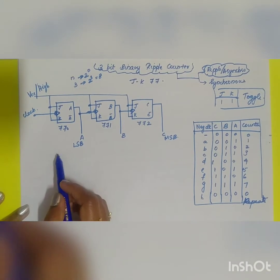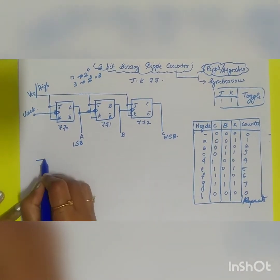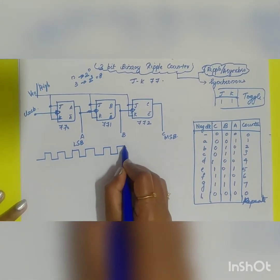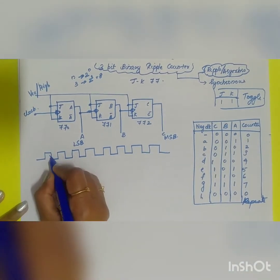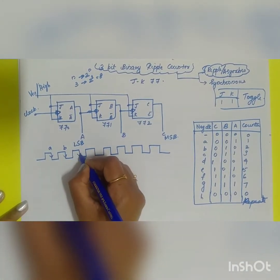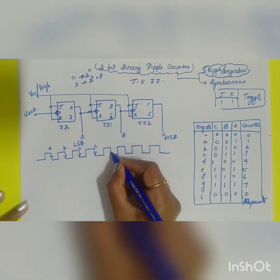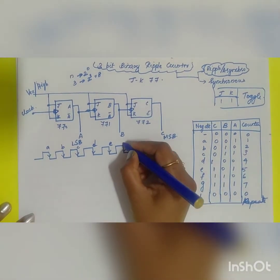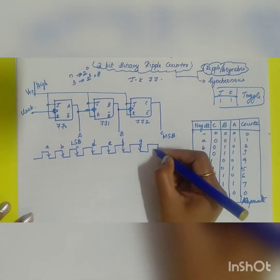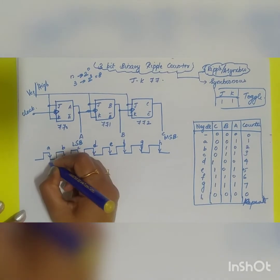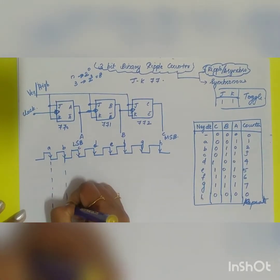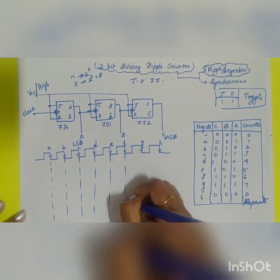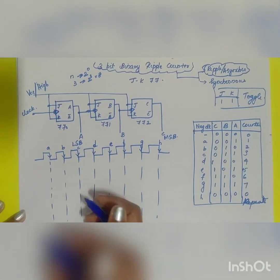Now let us see the waveform and the working principle. The clock sequence is applied, and since it is negative edge-triggered, toggling happens at each negative edge — labeled A, B, C, D, E, F, G, H. Initially, all flip-flop outputs are cleared to 0.